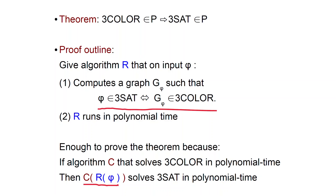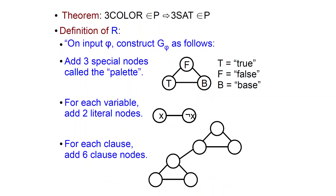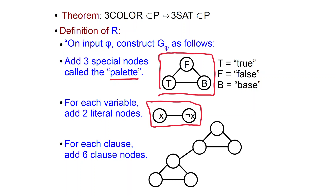Here is the definition of R. We are going to have three special nodes in the graph called the palette — just like the painter's palette. We give names to these nodes: T for true, F for false, and B for base, a special color with a special role. Then for each variable we add two literal nodes, X and not-X, connected by an edge, and for each clause we add six clause nodes with a special gadget.